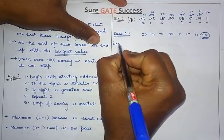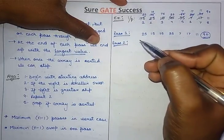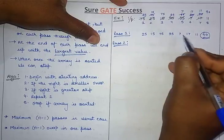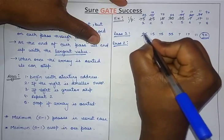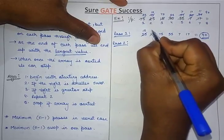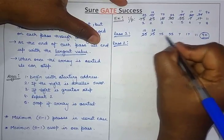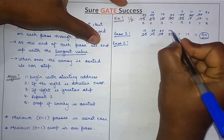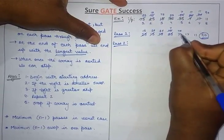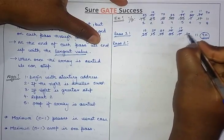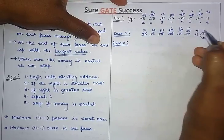Similarly, let's move on to pass 2. In pass 2 we apply the same logic to the result of pass 1. You can see 25 is greater and 15 is smaller — right is smaller, so we swap. Right is greater, leave it. Right is smaller, swap it. Right is smaller, swap it again.